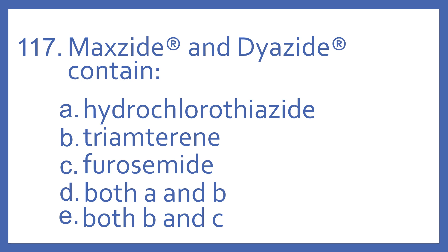Number 117. Maxide and Dyazide contain: A, hydrochlorothiazide; B, triamterene; C, furosemide; D, both A and B, which would be hydrochlorothiazide and triamterene; or E, both B and C, which would be triamterene and furosemide.